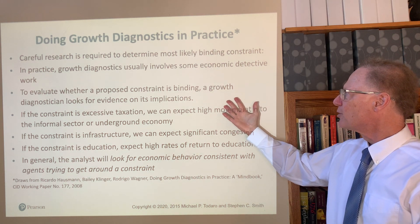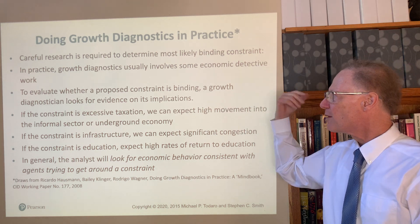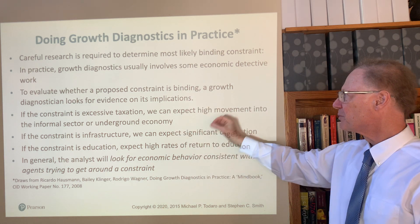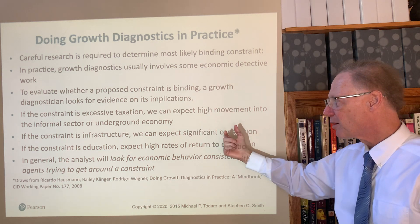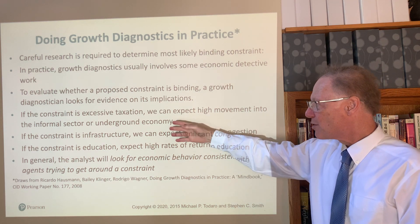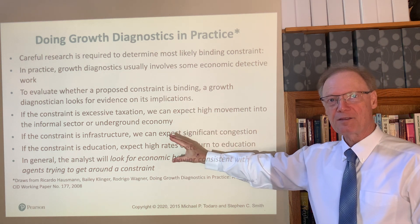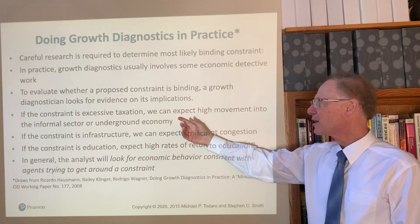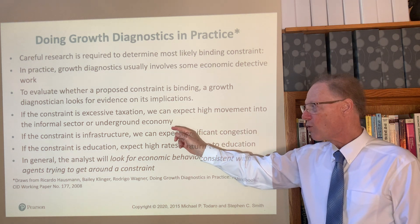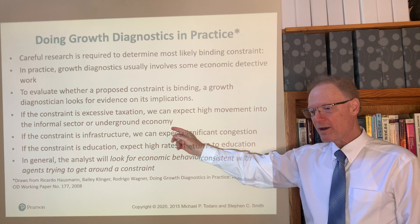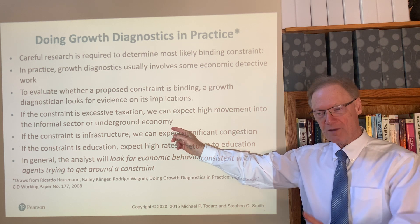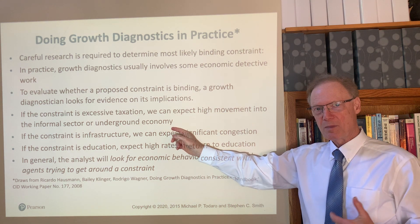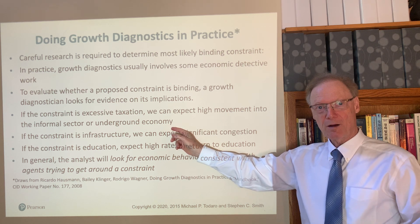You have to look for the implications of being in one of these 10 possible boxes. For example, as we discussed in the previous episode, one possibility is that the problem is excessive taxation. If that's your hypothesis, then there should be some implications you can observe. You can expect high movement into the informal sector, or the so-called underground economy, where it may be more possible to evade taxes. It's costly to move from the formal economy into the underground economy, but it may be worth firms' while if taxes are high enough.